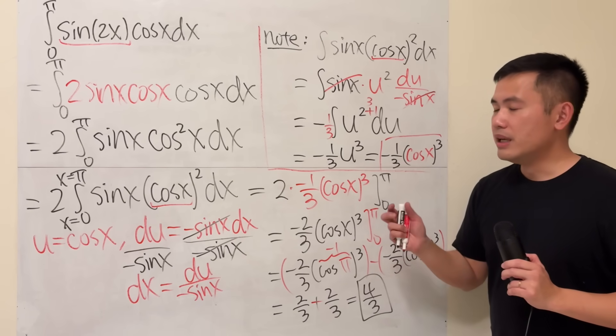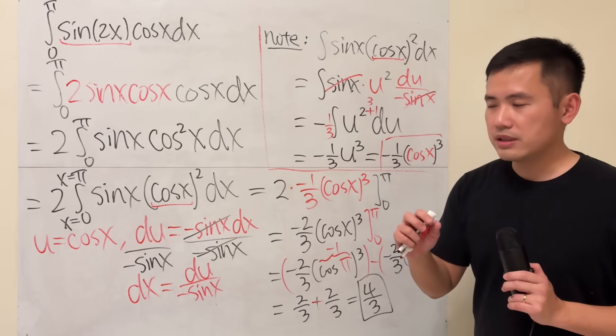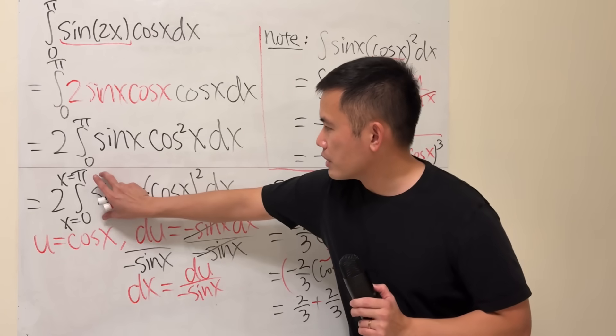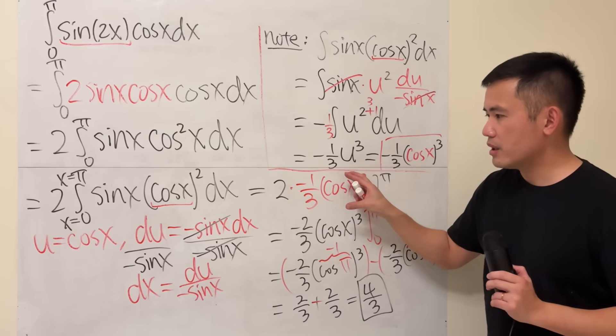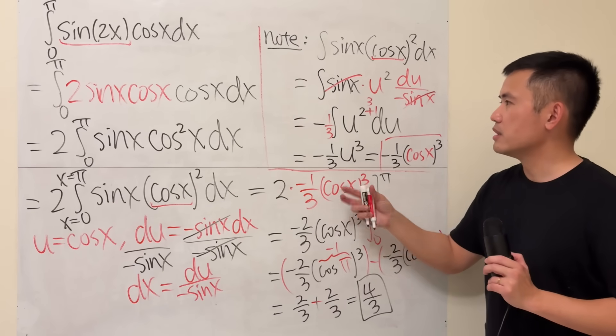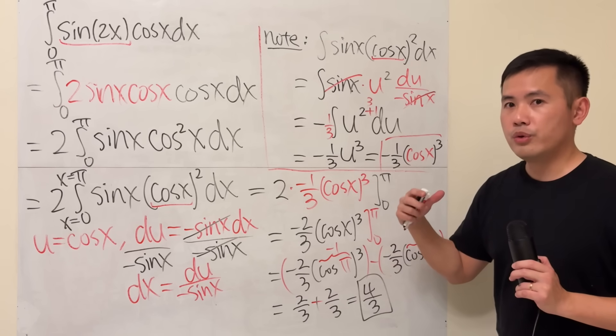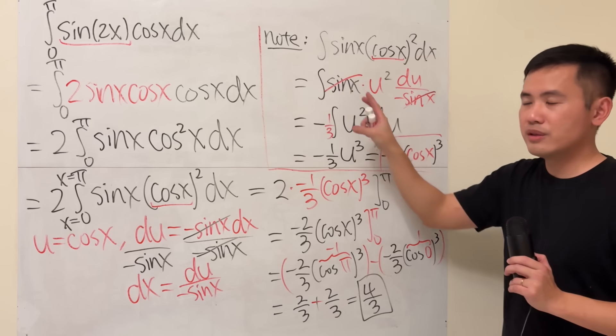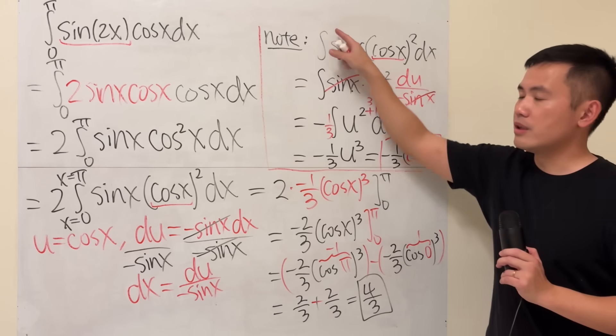And I will tell you, sometimes when you read the solutions, they will skip steps. Because just like this, they went from here to here. That's why you get lost. And you have to be able to work out the previous part, which is the u substitution when there are no numbers here.